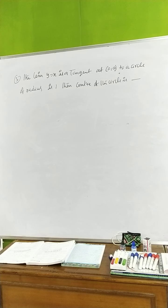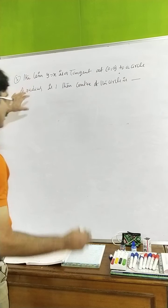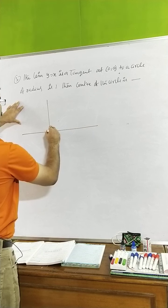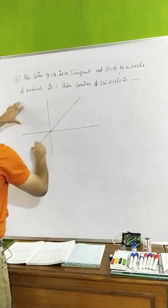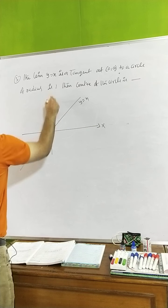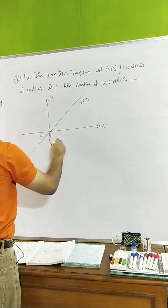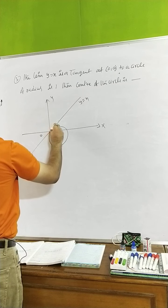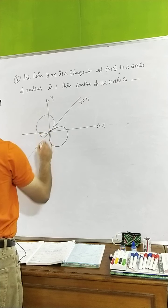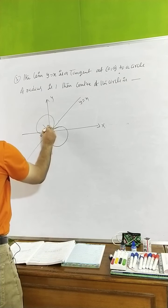Another question: the line y = x is a tangent to the circle. Drawing a rough diagram, y = x makes 45° with x-axis. Two possibilities exist: one circle on each side of the line, so two possible circles can be tangent to y = x.